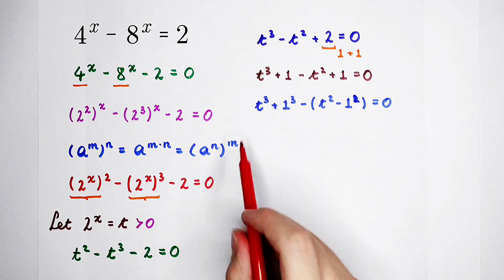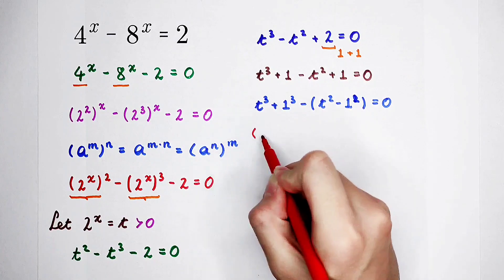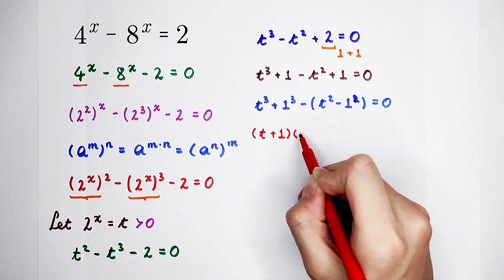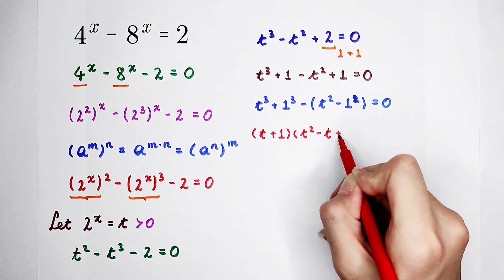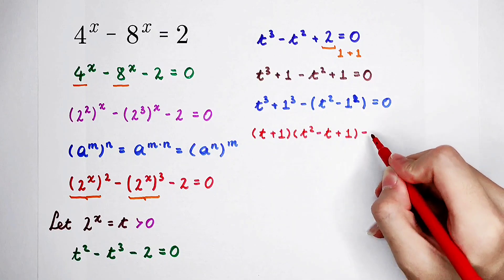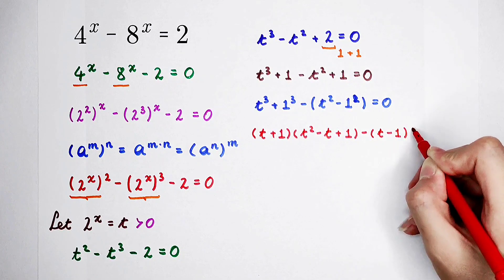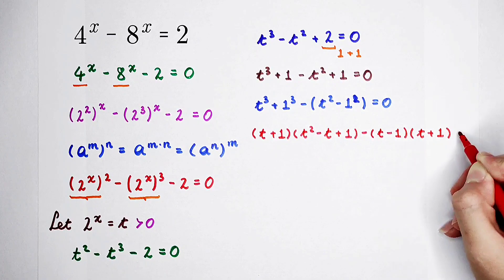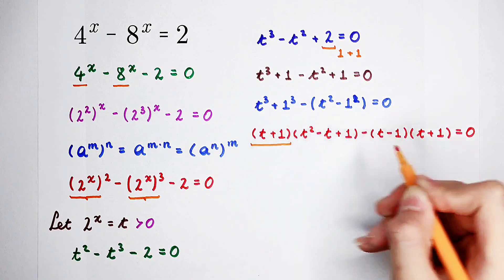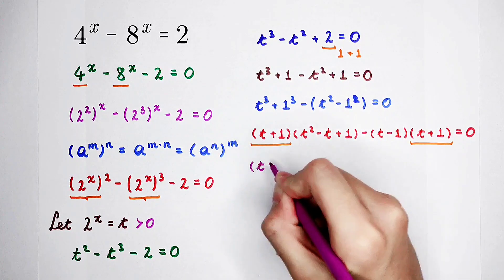So then we factorize t cubed plus 1 cubed as (t + 1)(t² − t + 1). And then we factorize t squared minus 1 squared as (t − 1)(t + 1). The right side is still 0, and the common factor (t + 1) can be taken out.